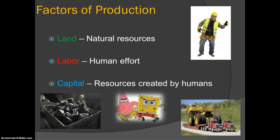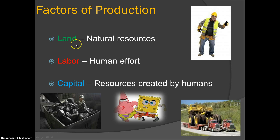We're going to focus on factors of production and the four basic questions. You can basically break down the factors of production into three divisions: land, labor, and capital. Land refers to your natural resources.